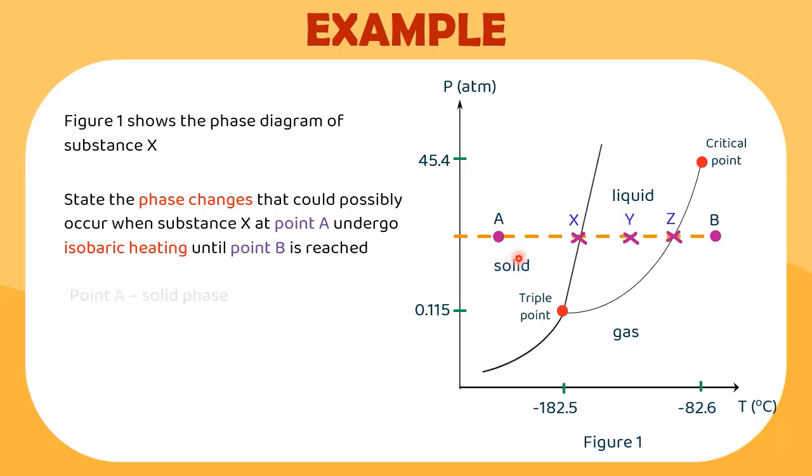Point A is located on solid region. Point X, since it lies on a line, indicates the two phases are in equilibrium: solid and liquid in equilibrium. Moving on to the next region, we have point Y. Point Y is in liquid phase.